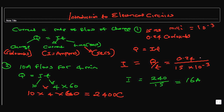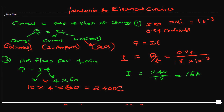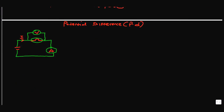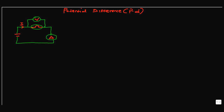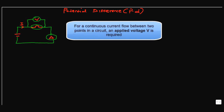Now we're going to talk about some more interesting stuff — potential difference, which is known as voltage. We already know that for a current to flow between two points in a circuit, there has to be an applied voltage.